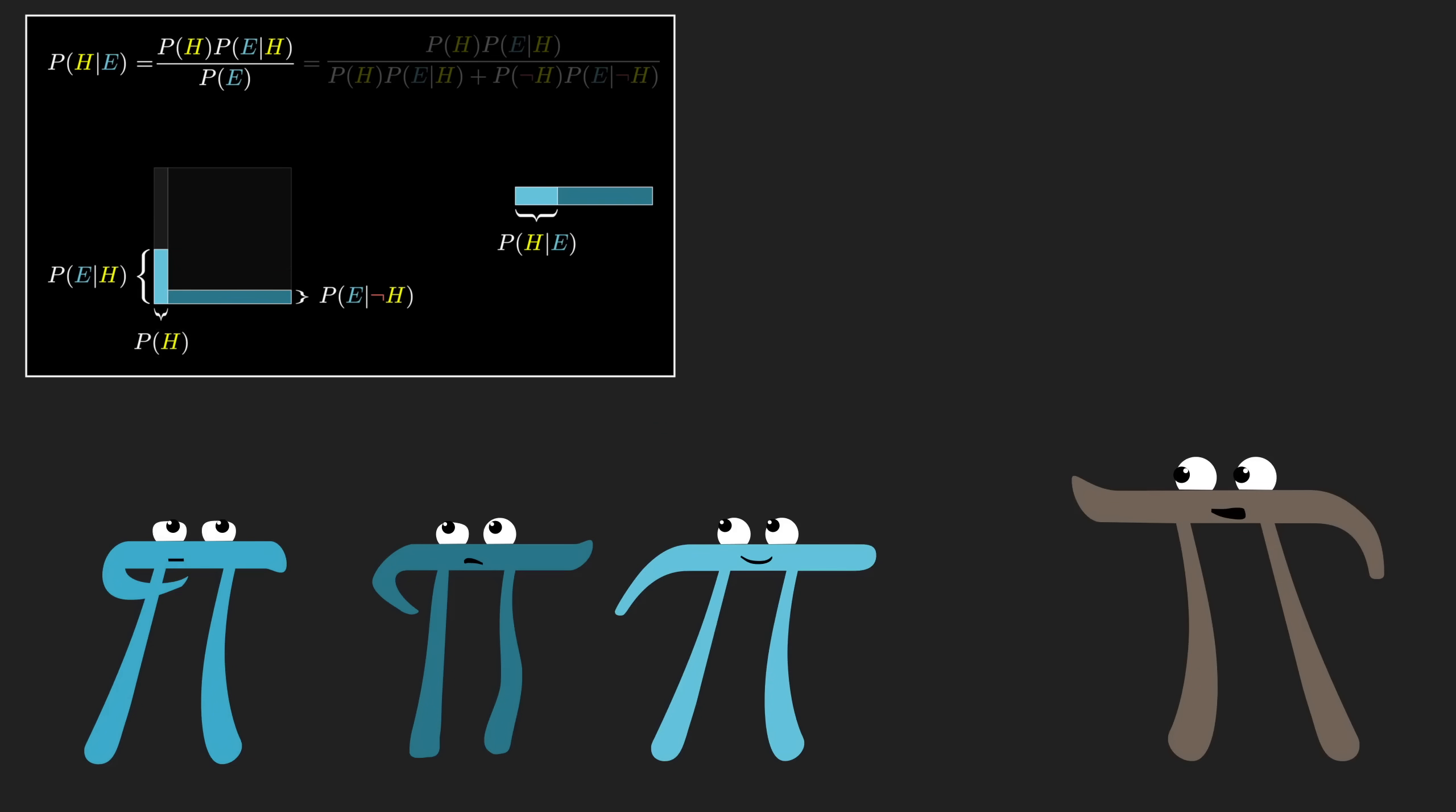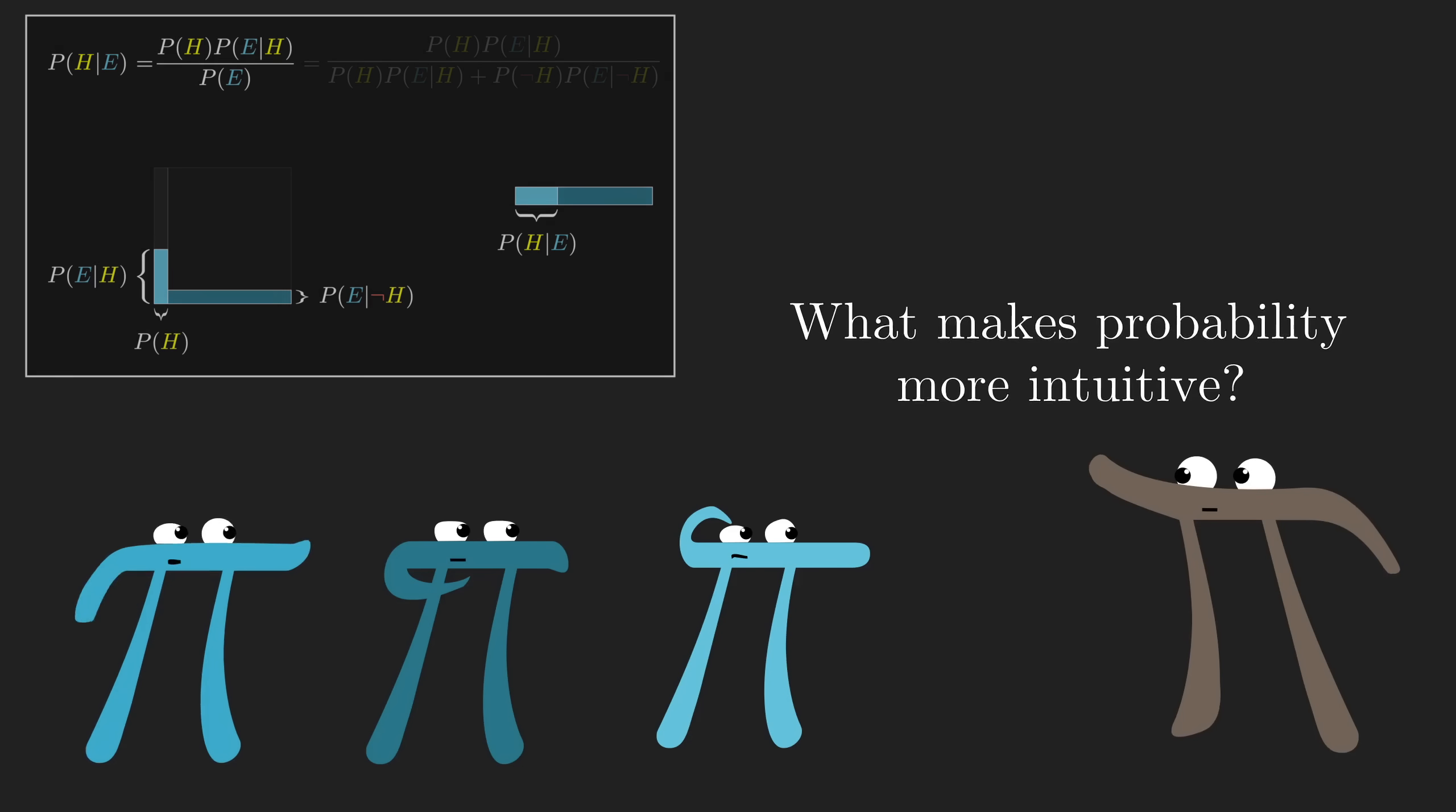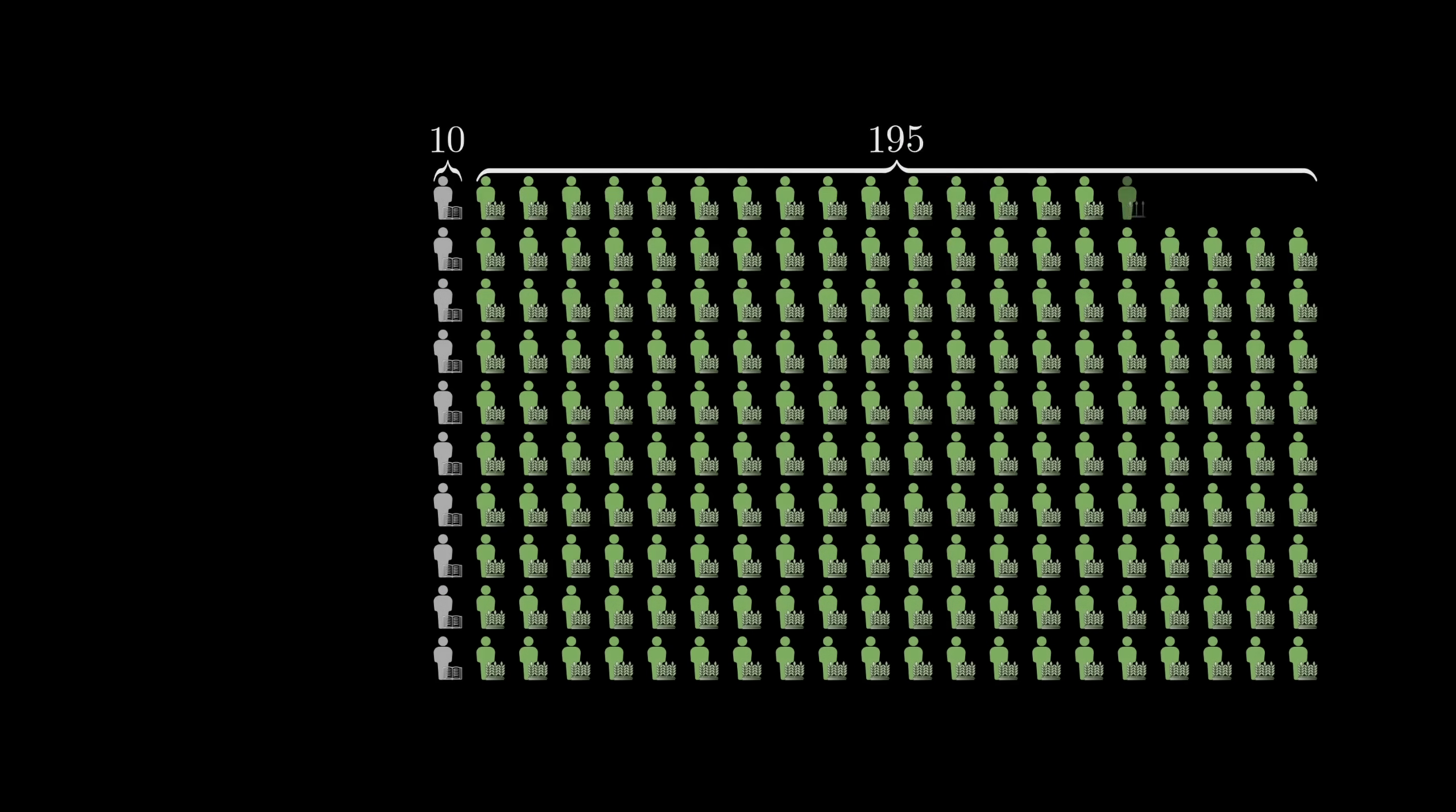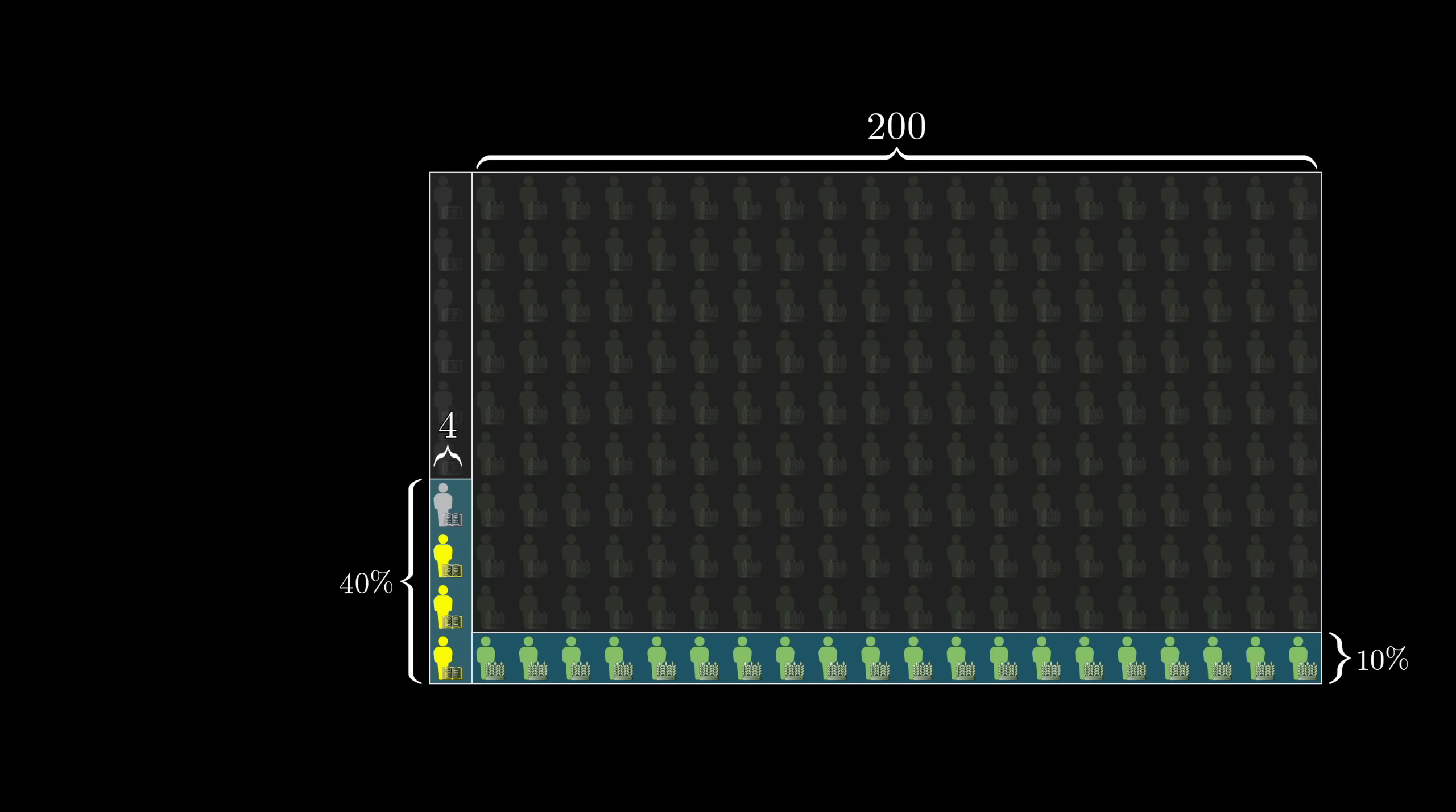Alright, this is probably a good time to take a step back and consider a few of the broader takeaways about how to make probability more intuitive beyond just Bayes' theorem. First off, notice how the trick of thinking about a representative sample with some specific number of people, like our 210 librarians and farmers, was really helpful.